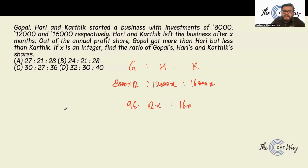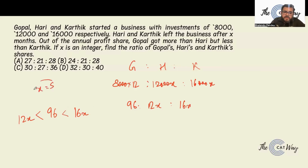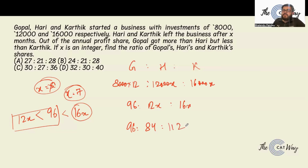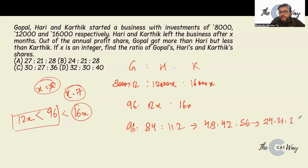Gopal got more than Hari means 96 greater than 12X, and less than Karthik means 96 less than 16X. Taking X equal to 5: 12X is 60 and 16X is 80 — but 96 is not less than 96... checking X equal to 7: 12X is 84 and 16X is 112. So 96 is greater than 84 and less than 112 — X equals 7 works. The ratio is 96 to 84 to 112. Dividing by 4 gives 24 to 21 to 28. Option B is the correct answer.